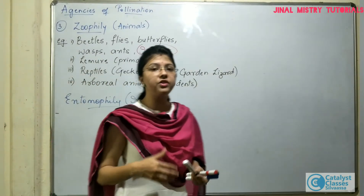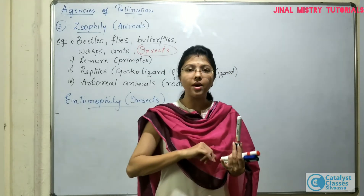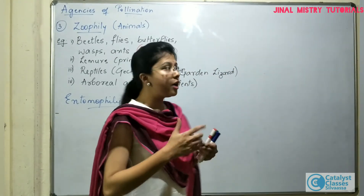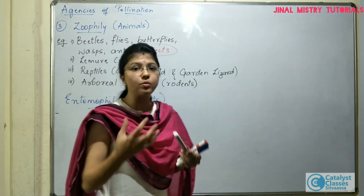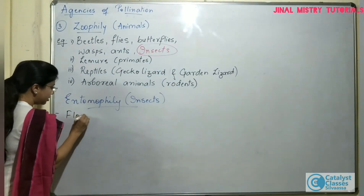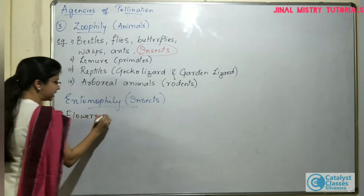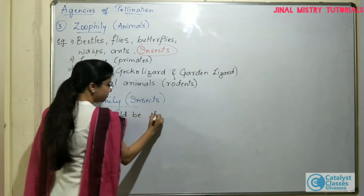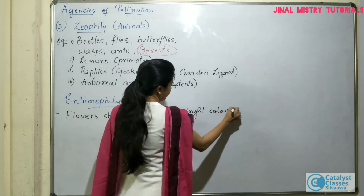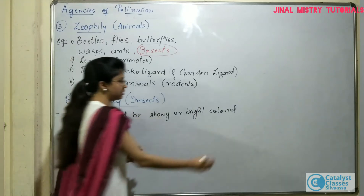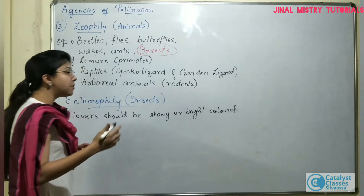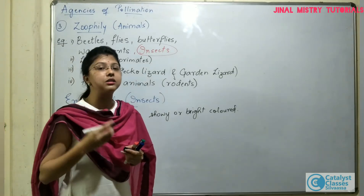Now, like we have studied in anemophily, which was one of the abiotic agents, the flowers do not require any kind of odor, neither do they require any kind of showy or bright colored appearance. But here it will be completely opposite. Since these insects or animals are the biotic agents, they are to be attracted towards the flower or the plant. As a result, the flowers of plants which are to be pollinated by insects should be showy or should have bright colors. In case the flower is not showy or bright colored, then some other part of the plant should be brightly colored so that it can attract the insects.